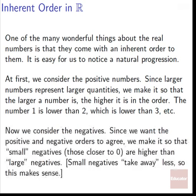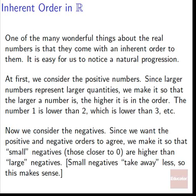Now, what if we want to expand that to the negative numbers? If we want our order to be usable not just on the positive portion, but also on the negative, we want our negative and positive orders to agree. We make it so that small negatives — the negatives closer to 0 — are higher in the order than large negatives. A small negative takes less away, so it's closer to being a positive than a big negative number. So it makes sense that really big negative numbers come lowest, then small negatives, then 0, then small positives, then large positives. This makes internal logic — it doesn't contradict itself.